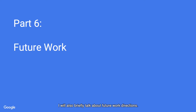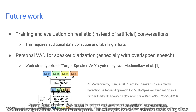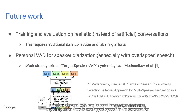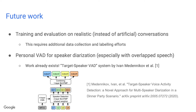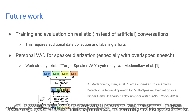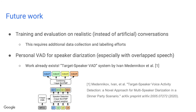I will also briefly talk about future work directions. Currently, the Personal VAD model is trained and evaluated on artificial compositions, and we should really use realistic conversational speech, which will require lots of data collection and labeling efforts. Besides, Personal VAD can be used for speaker diarization, especially when there is overlapped speech. Researchers from Russia have already proposed a system known as target speaker VAD, which is similar to Personal VAD and has been successfully used for speaker diarization — I recommend reading their paper as well.